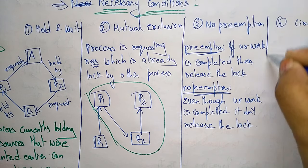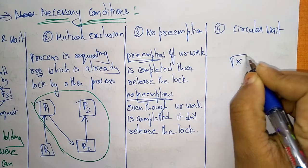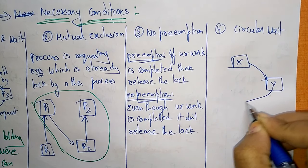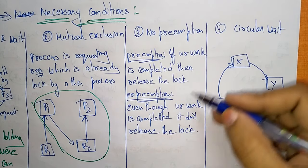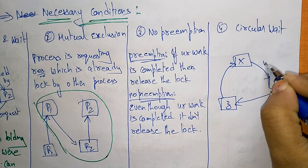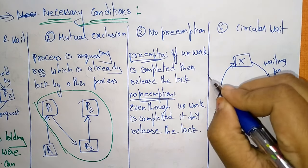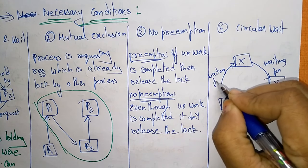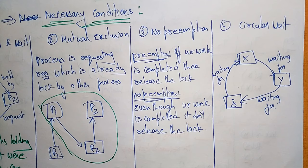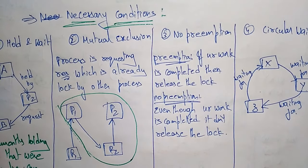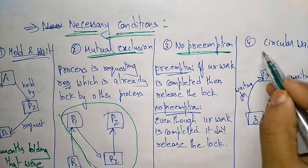The fourth condition is circular wait. Here, X is requesting Y, Y is requesting Z, and Z is again requesting X — forming a circle. So X is waiting for Y, Y is waiting for Z, and Z is waiting for X. This circular waiting condition causes a deadlock. These are the four necessary conditions for deadlock: hold and wait, mutual exclusion, no preemption, and circular wait.